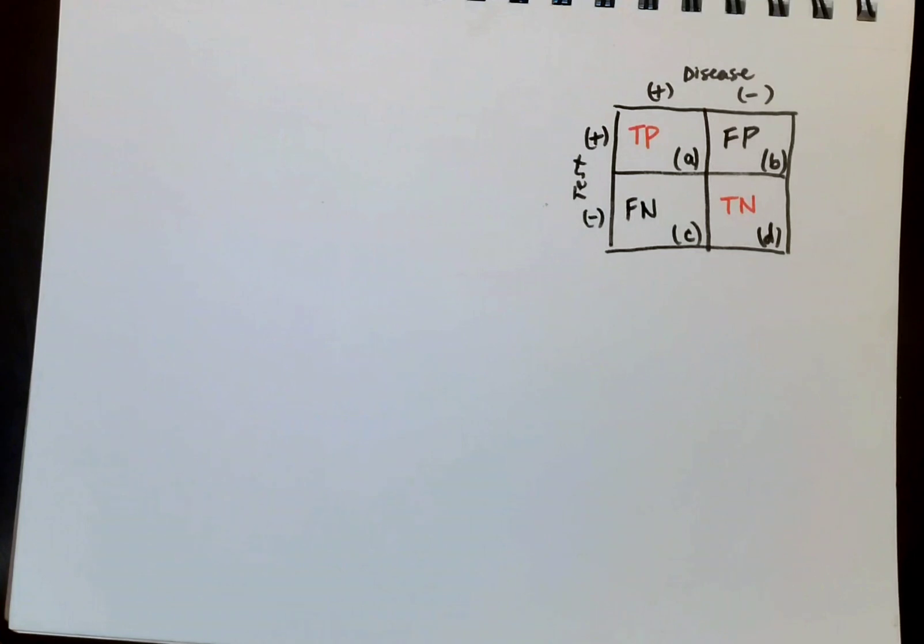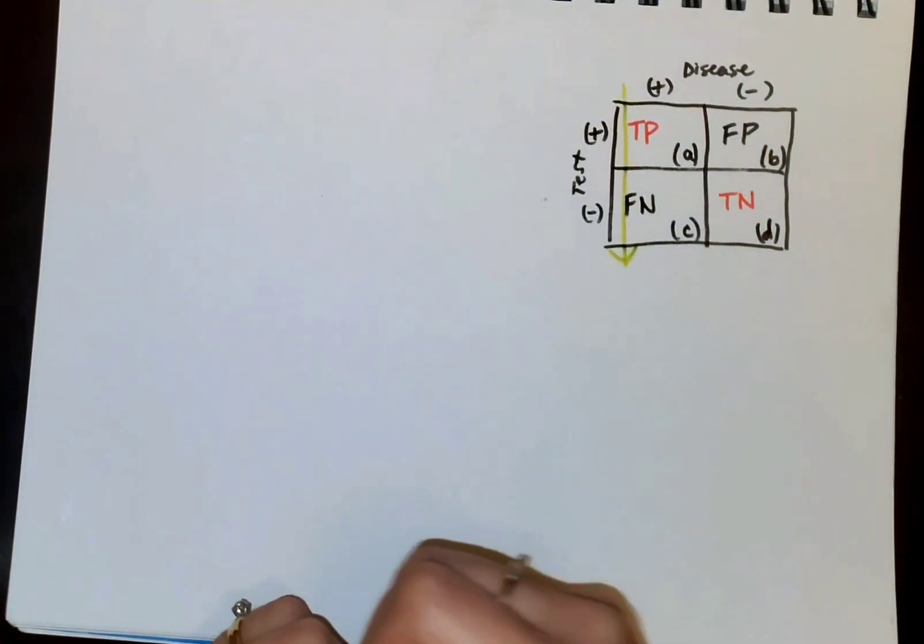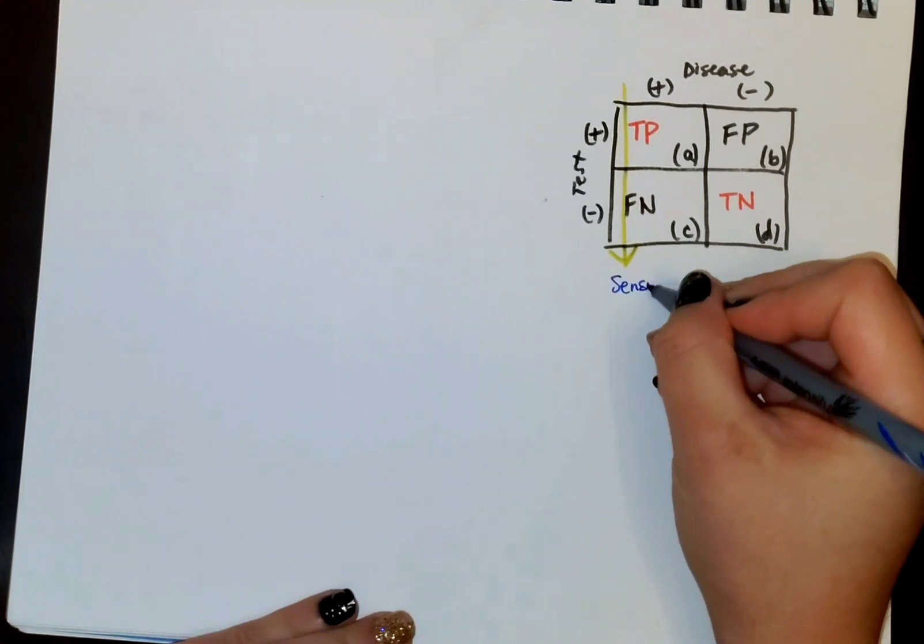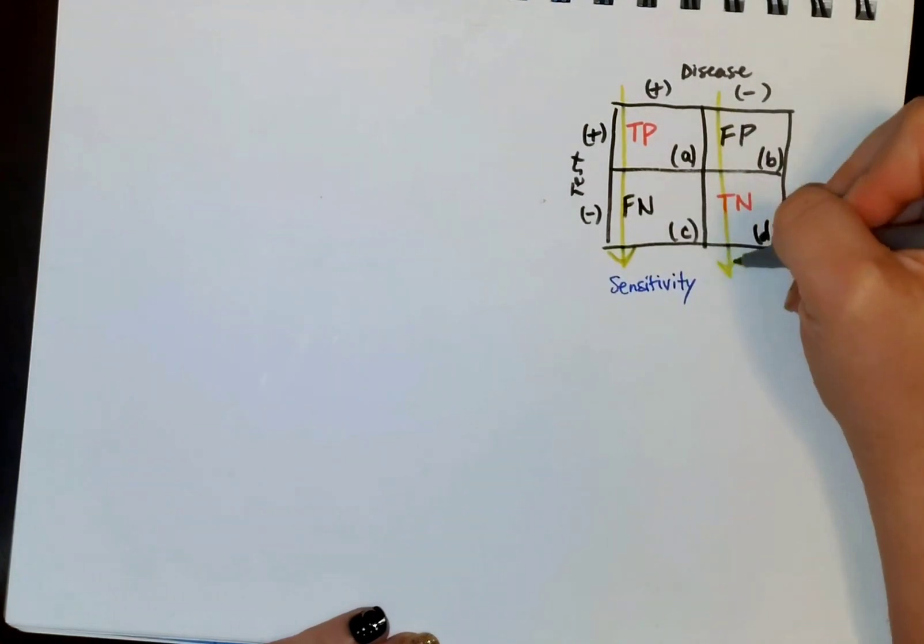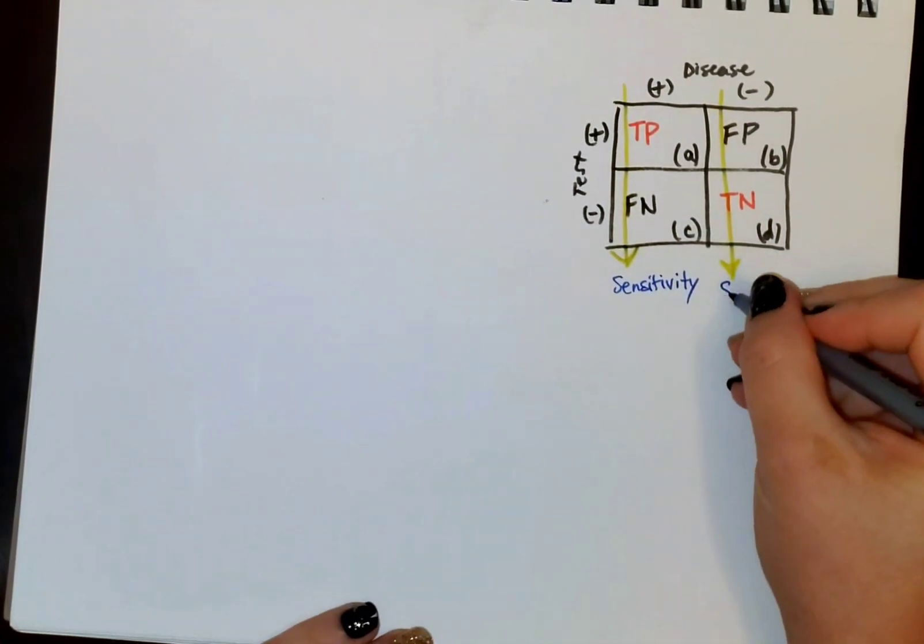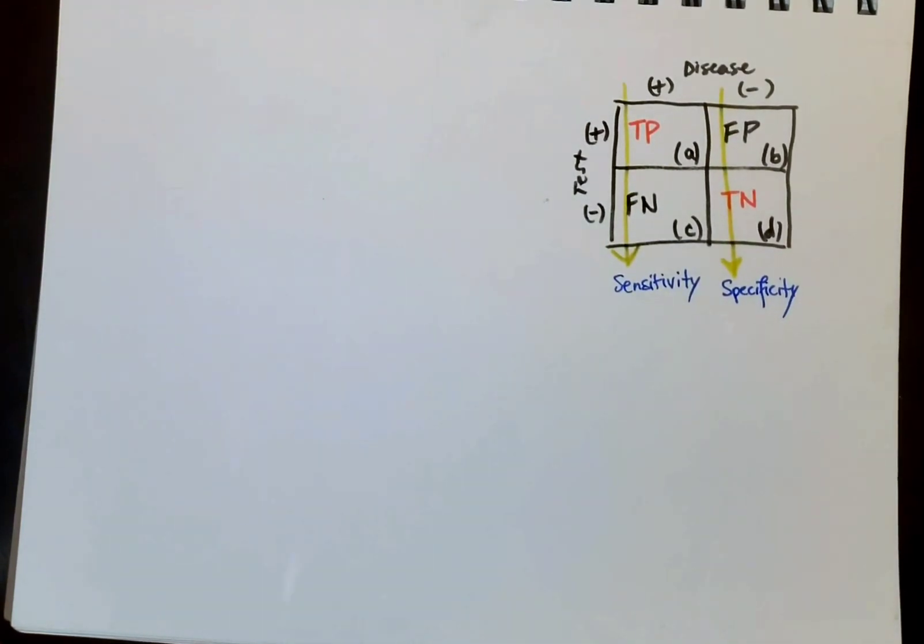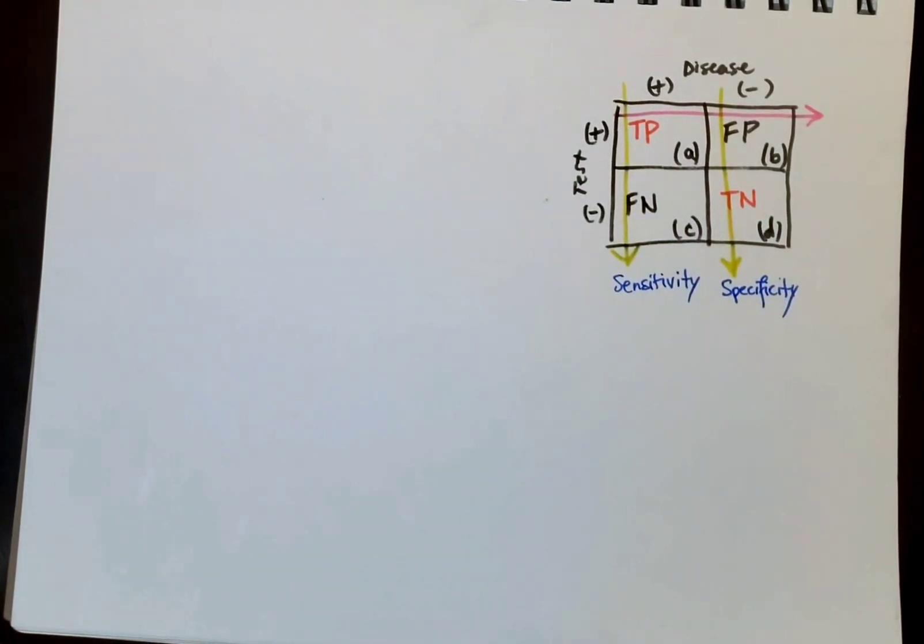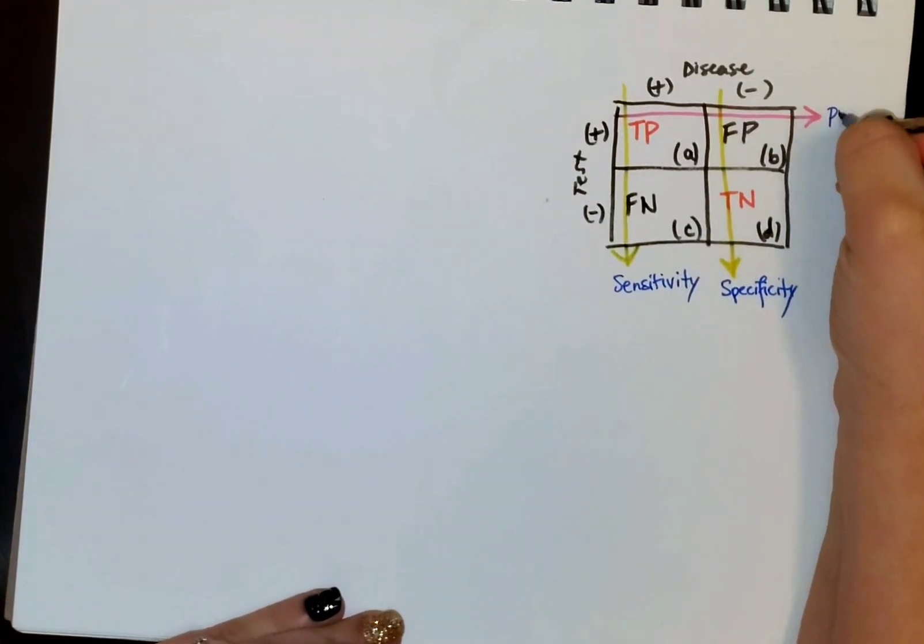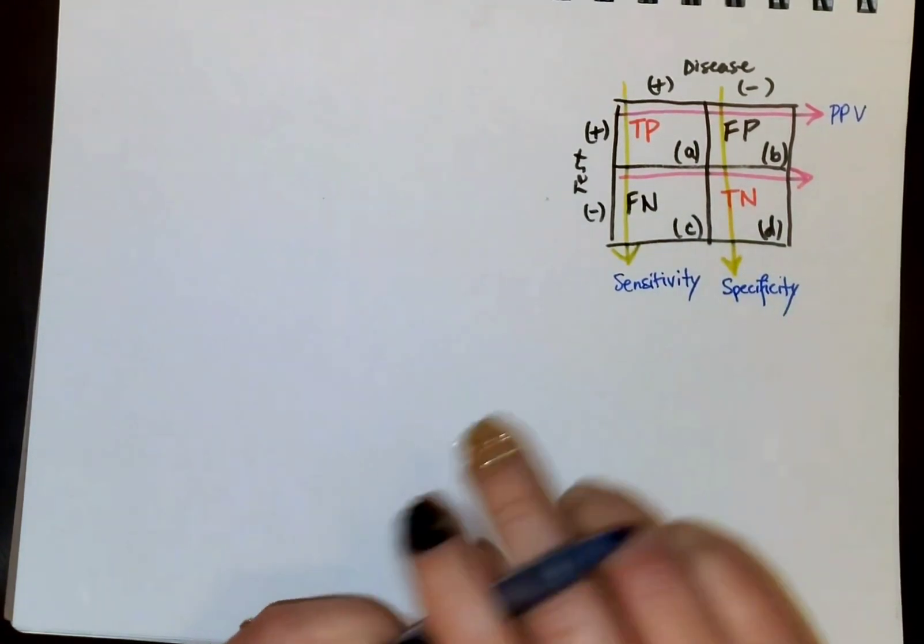Now the reason this table is so important is because so many things can be calculated from it. If you use these two values in this direction, this column is going to be sensitivity. This column is going to be specificity. Now the rows, top row is going to be positive predictive value. The lower row is going to be negative predictive value.